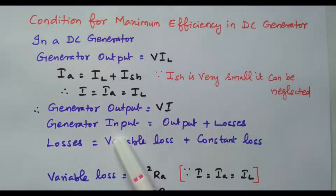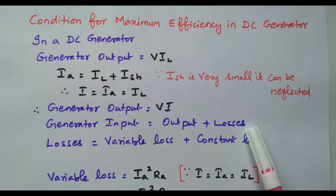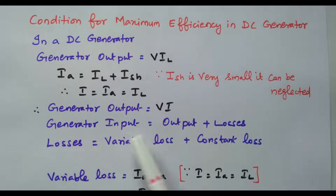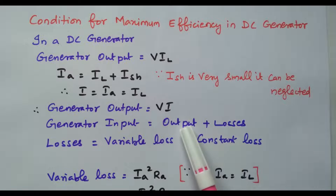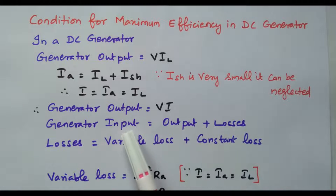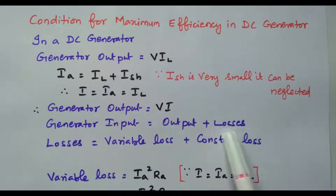The generator input is nothing but output plus losses. When input is given to the generator, it converts into output, but some losses occur. So input equals output plus losses. The output is already V into I, and now we can calculate the losses.